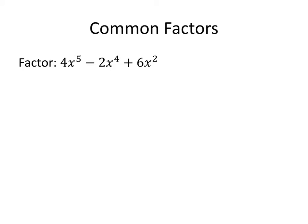In a polynomial like this, we want to find a common factor among all of the terms. Since all of the terms involve x to some power, we want to take the smallest power of x and factor that out of each term. In this case, the smallest power of x is x squared, and so that's what we're going to factor out first.